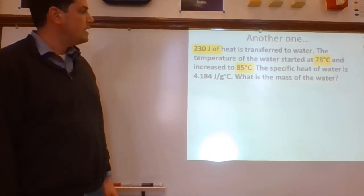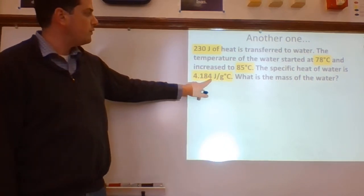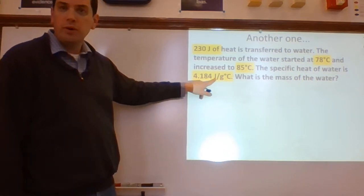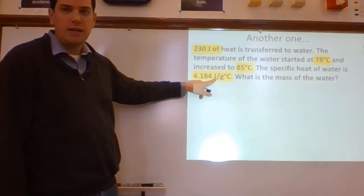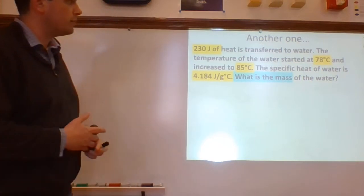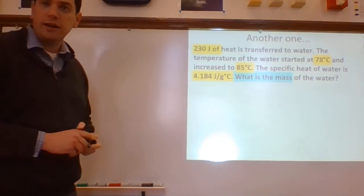The specific heat of water is 4.184. Look at that weird unit. Remember, weird unit means heat capacity, not heat. What is the mass of the water? All right, you highlight it. Good for you.